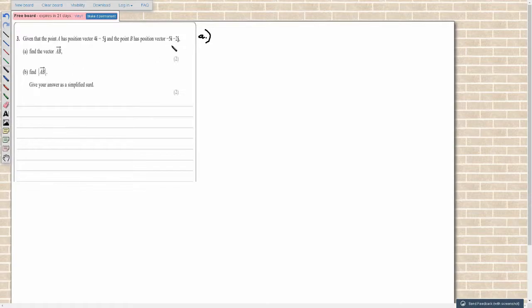To find the vector AB, this is just simply the vector B minus the vector A, or it's minus A plus B. So that's going to be minus 5i minus 2j minus, put it all in the bracket, 4i minus 5j. So be very careful with the signs. It can be really easy to trip up with this.